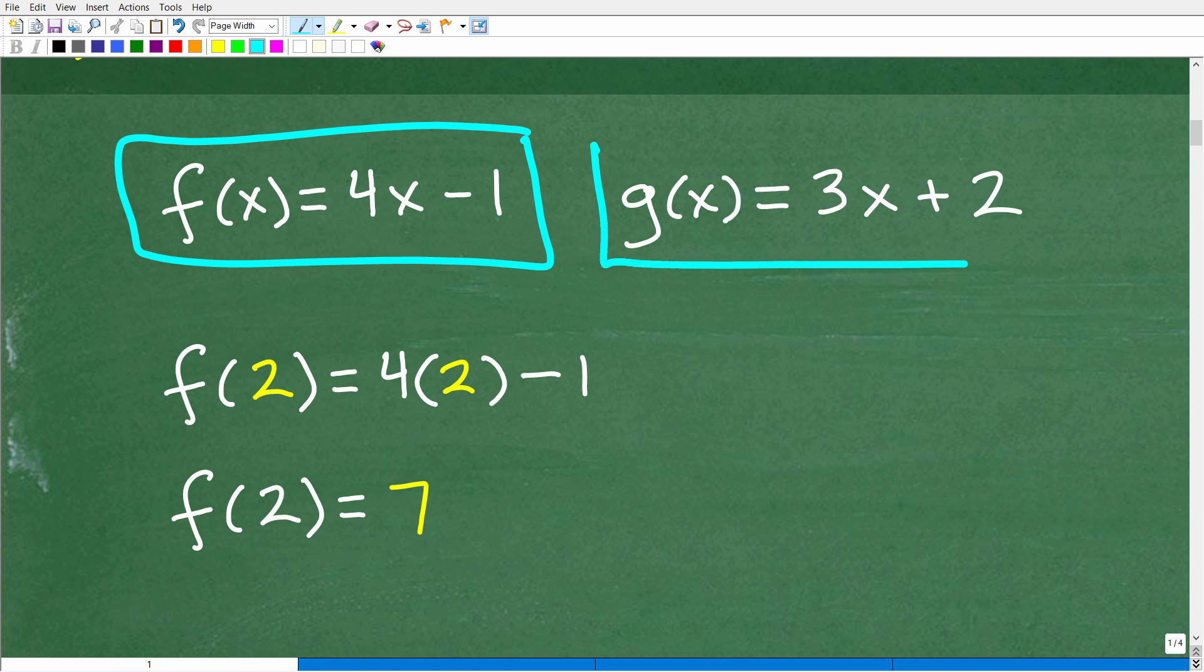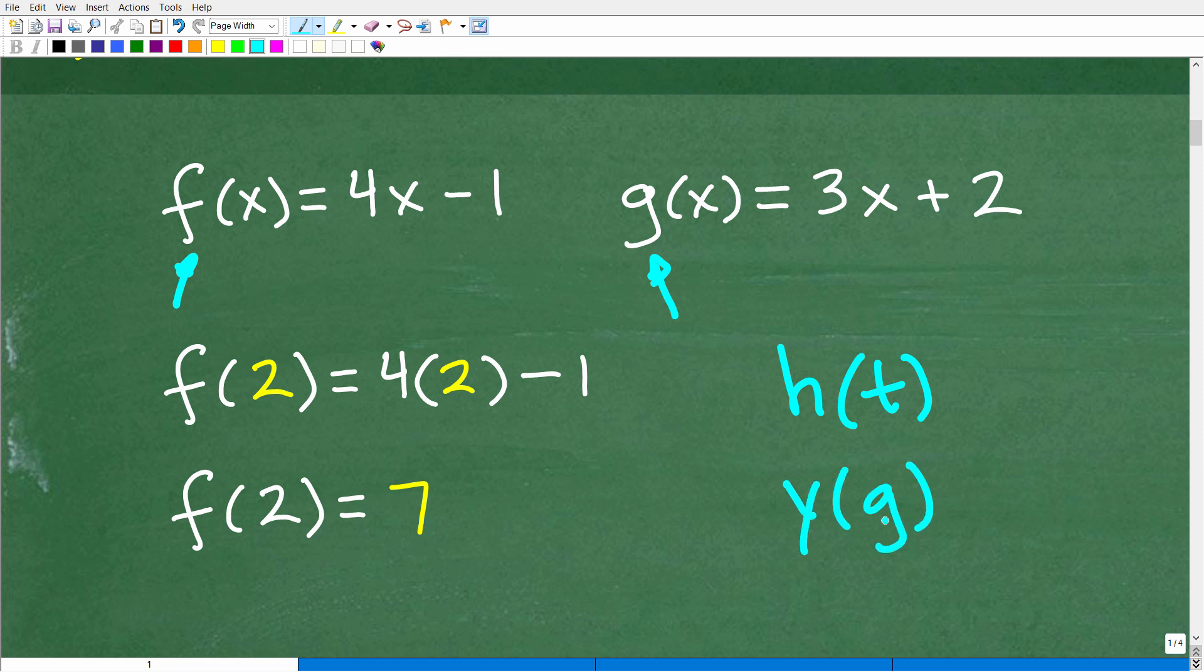Now, we have f(x) and we have g(x). These are two separate functions, and you can tell the name of a function by the variable in front right here. You can have all different sorts of names. We can have h(t), we can have y(g). We're just using f(x) and g(x). These are pretty common variables in algebra.